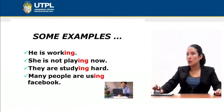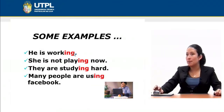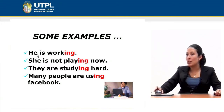For example: He is working. Notice that we use -ing to form the gerund, which is essential when talking about the present progressive. She is not playing now. They are studying hard, or many people are using Facebook. Notice that this is a present progressive because the auxiliary verb is in the present tense.